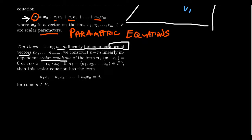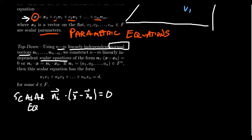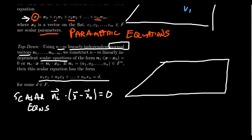Those scalar equations are going to look like N1 dot (X minus X0) equals zero — that's just the zero scalar. So this is what we mean by scalar equations, which when expanded out will look like this normal form. If we have our flat, the idea is: can we describe the flat using normal vectors? Can we take vectors which are orthogonal, which are perpendicular to the space in question?